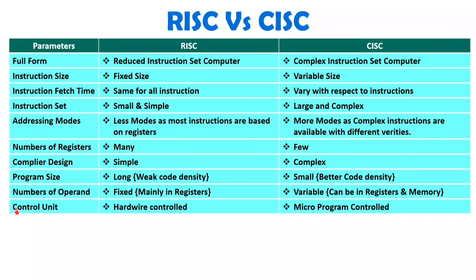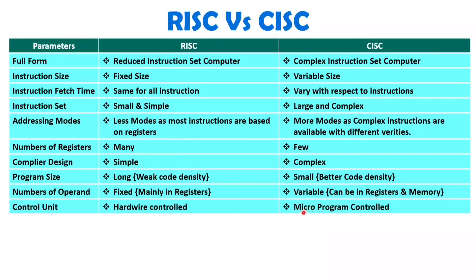When we talk about the control unit, a hardwired control unit is used with RISC because the instruction set is fixed and has simple instructions. With CISC, providing a hardwired control unit would be very costly, so a microprogrammed control unit is used instead. Hardwired control is faster compared to microprogrammed control — hardware provides direct execution, while in microprogrammed control, the microprogram gets executed and controls the operation.